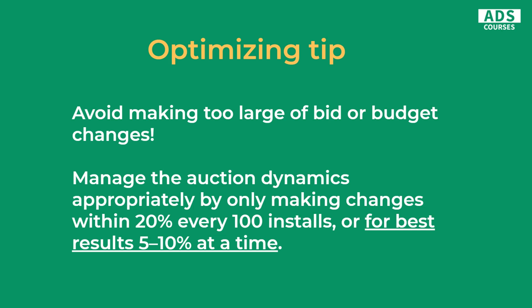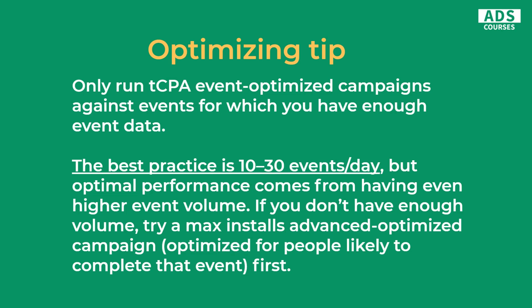Here are some optimization tips. First, avoid making large bid and budget changes too often. During the learning period don't make changes, and even afterward you shouldn't change bids or budgets by more than 20% at a time — and you should stick to about 5 to 10 percent changes per 100 installs.